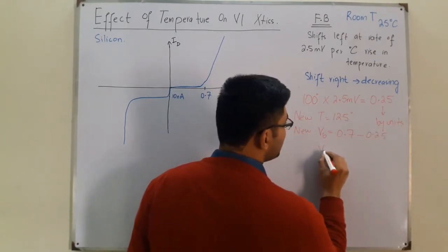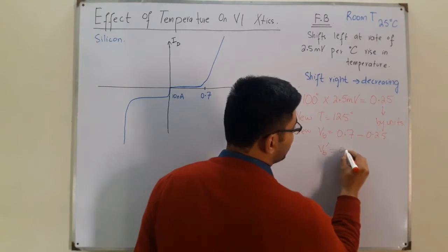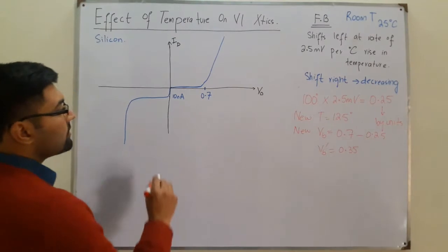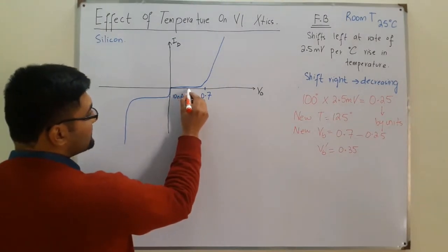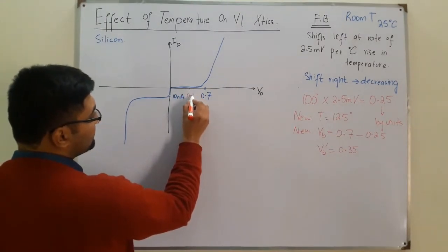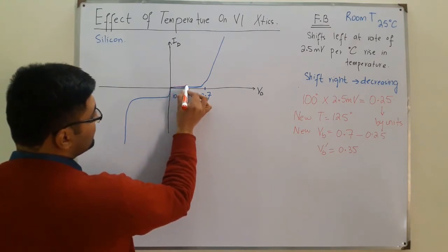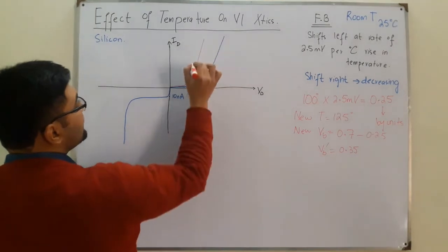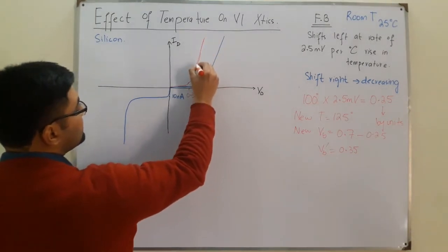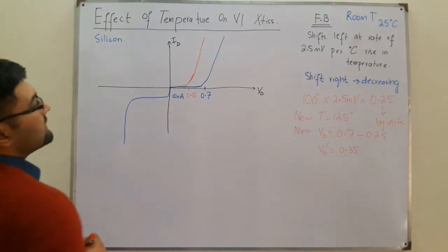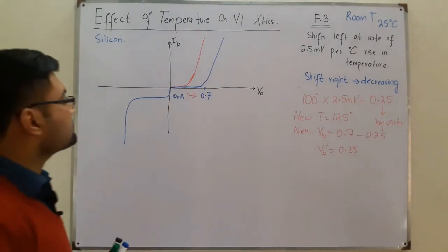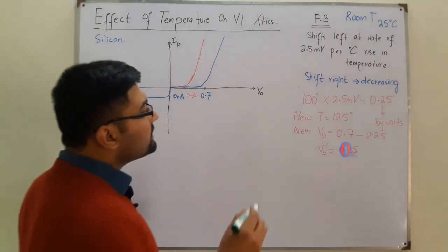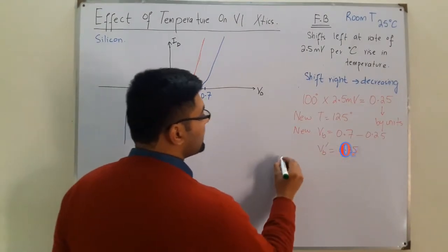The new barrier potential VB' would be the previous value of 0.7 minus 0.25, which equals 0.35 volts. So the new barrier potential has reduced, and we have a rapid increase starting at approximately 0.35 volts.